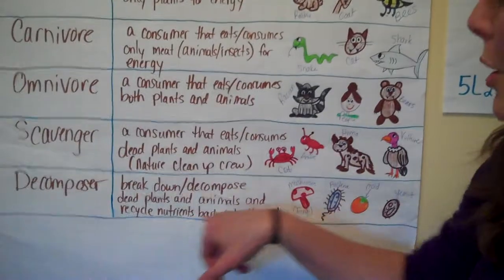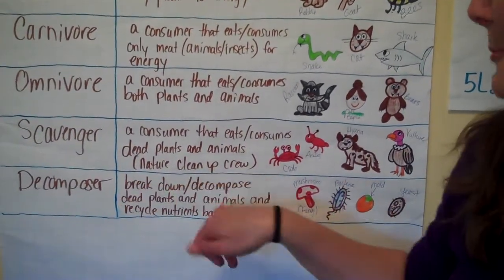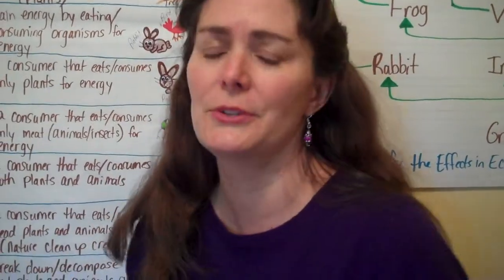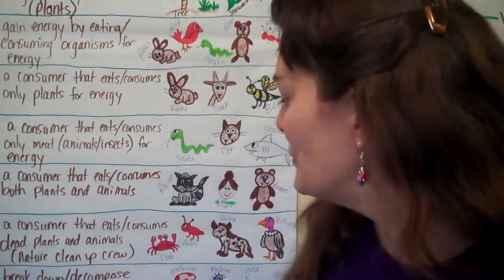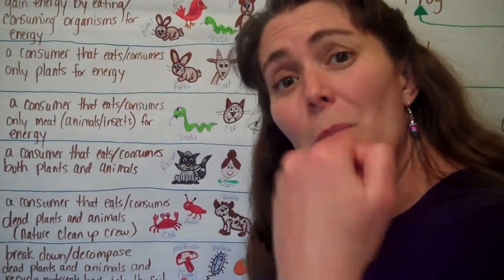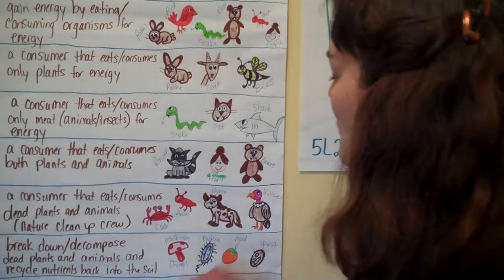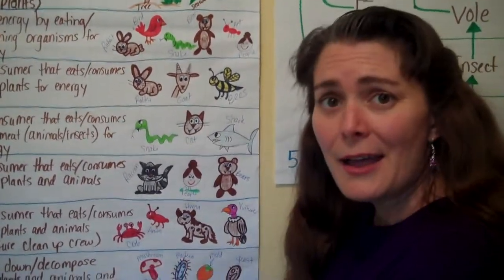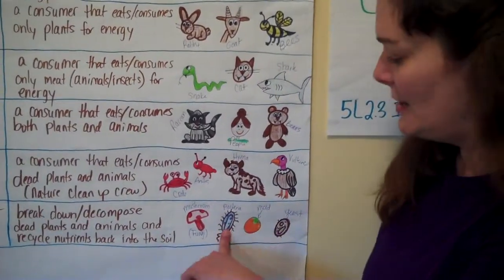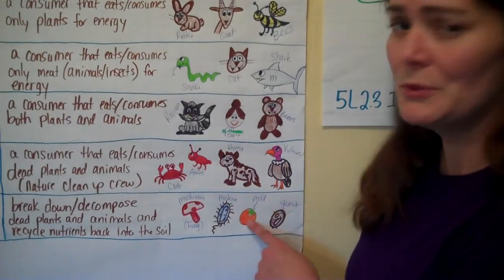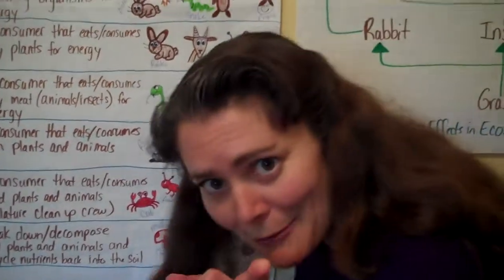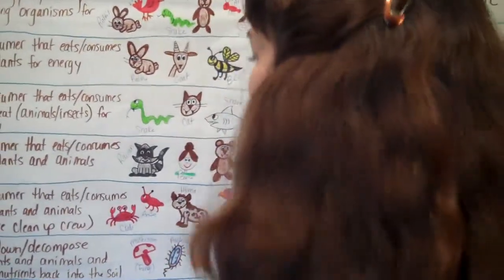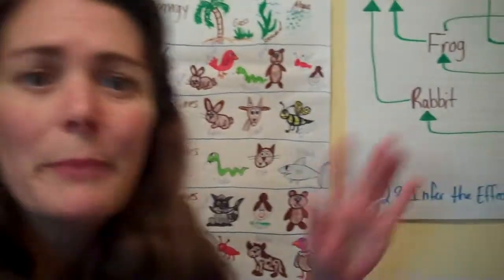Decomposers break down and decompose dead plants and animals, and recycle nutrients back into the soil. They are our recyclers in our ecosystems — they give those nutrients back to the soil for our plants to use, in order to start that process all over again. What are some decomposers? Fungi, mushrooms, bacteria — you can't see bacteria with the naked eye, you need a microscope — mold, and yeast. All of these decomposers recycle nutrients back into our ecosystem.